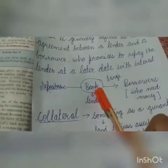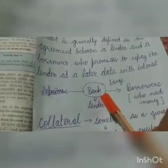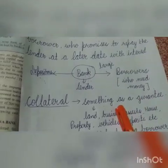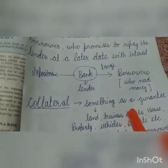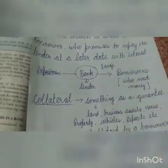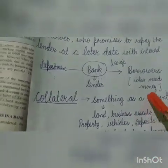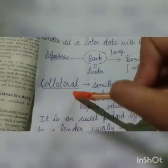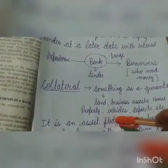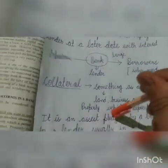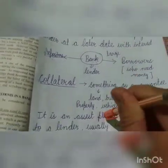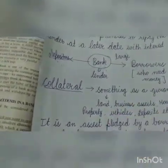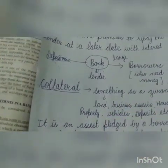Koi bhi borrower agar bank se loan leta hai, uske against koi security rakhou — aur uske against joh hum security rakhte hai as a guarantee, koi bhi chiz rakhte hai to usko bolte hai collateral. So this is all about today's lecture. If you have any doubt, you can ask me. Thank you.